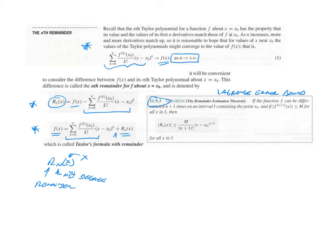It's referred to by the College Board as Lagrange error bound. People as young as me know it as the Taylor remainder. Here we have the remainder magnitude, irrespective of sign, and we want it to be less than or equal to this expression.